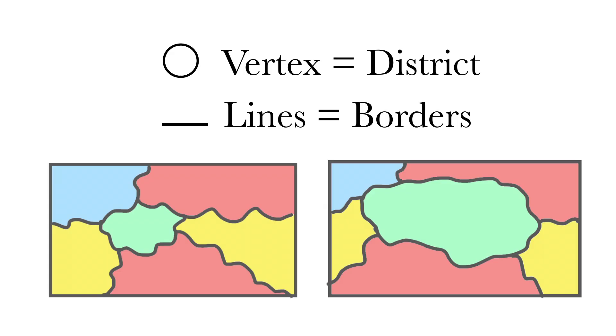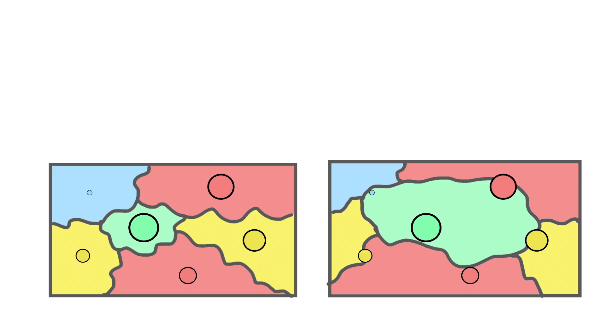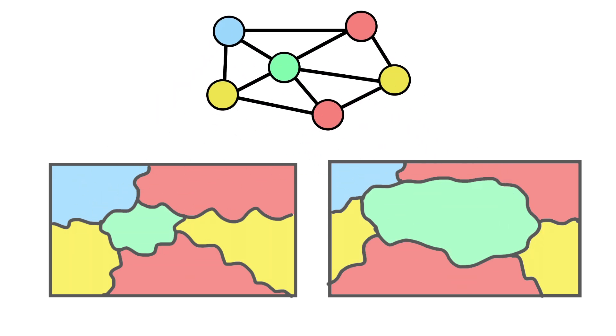Instead, let's represent each district with a colored circle, called a vertex, and borders with connecting lines. So we can draw both these maps in the same way. The end product is called a planar graph.